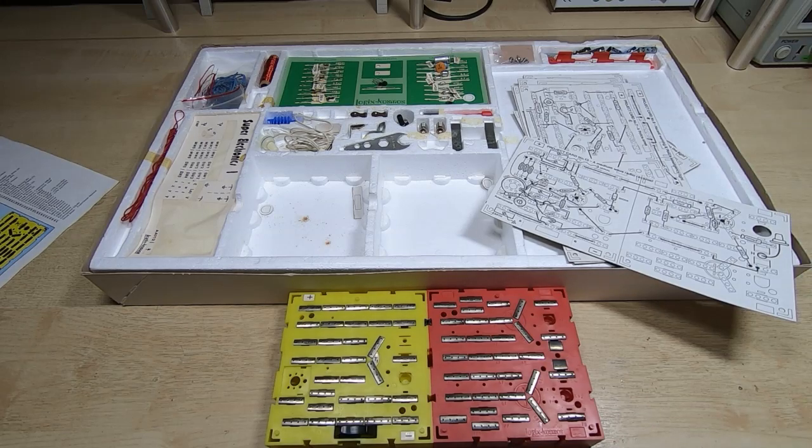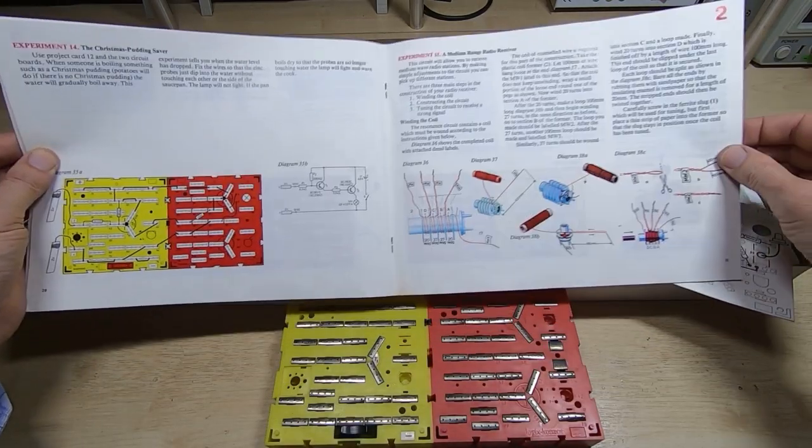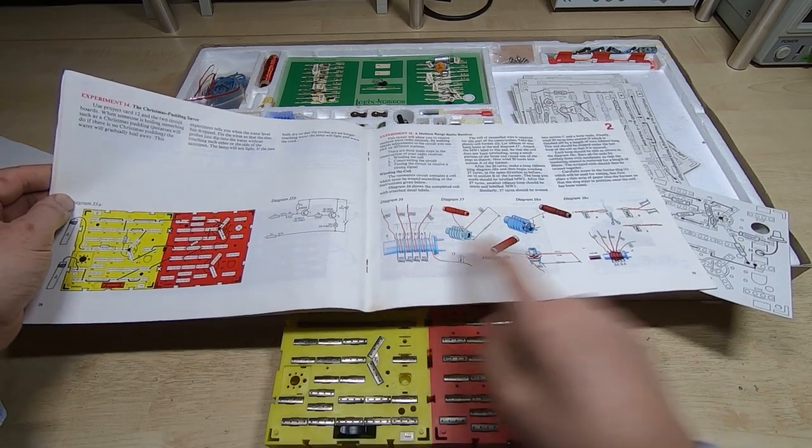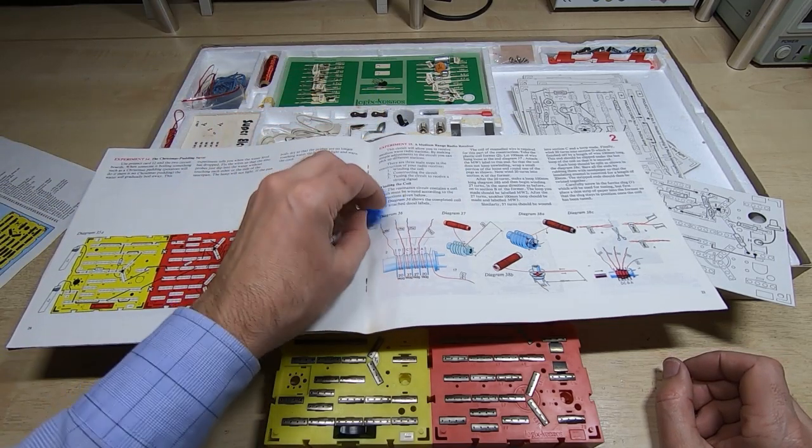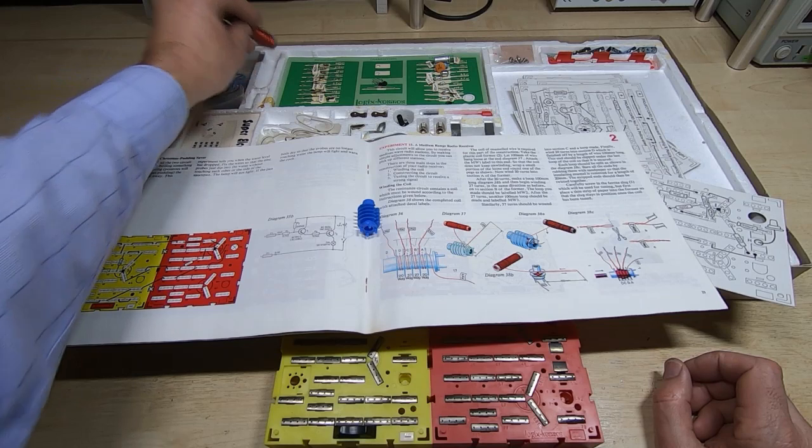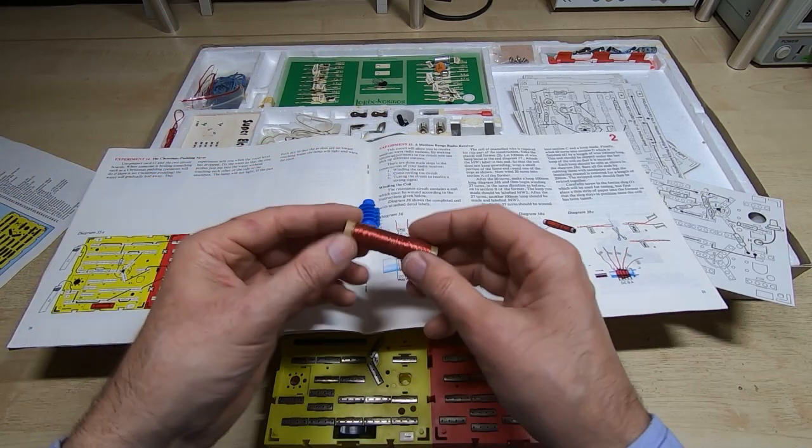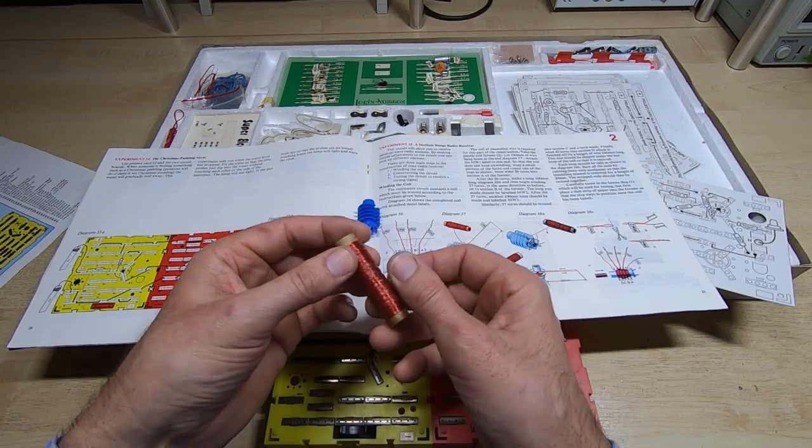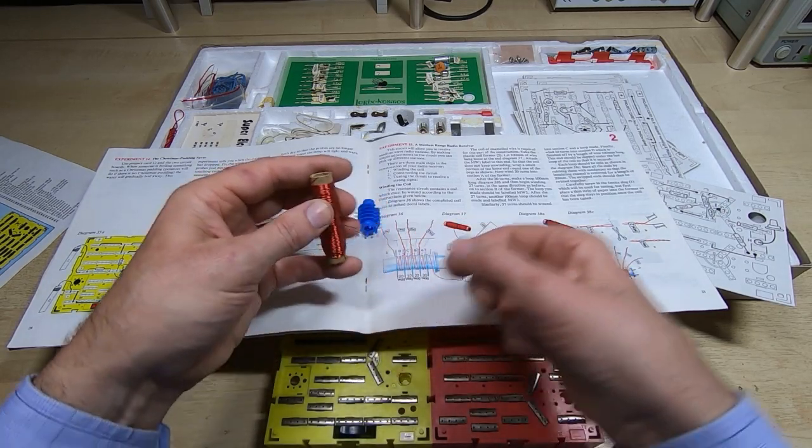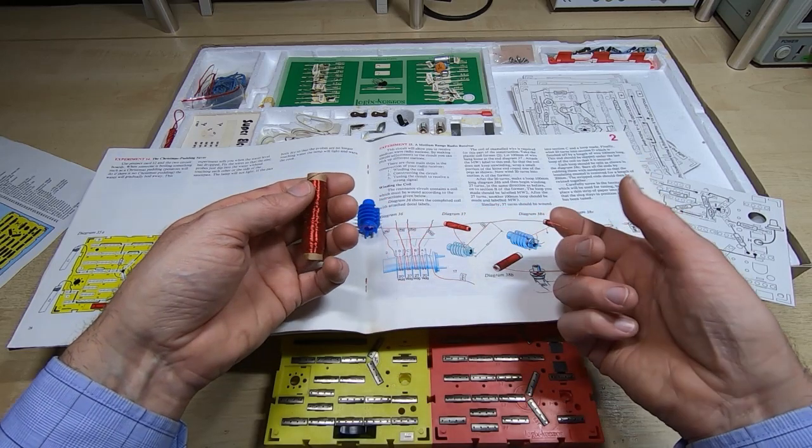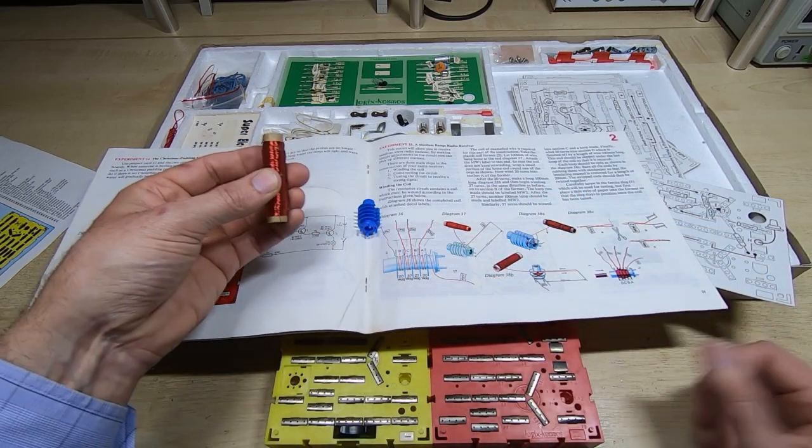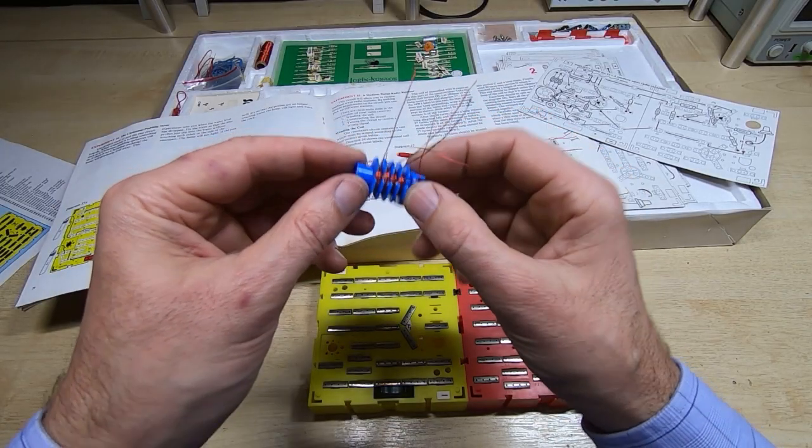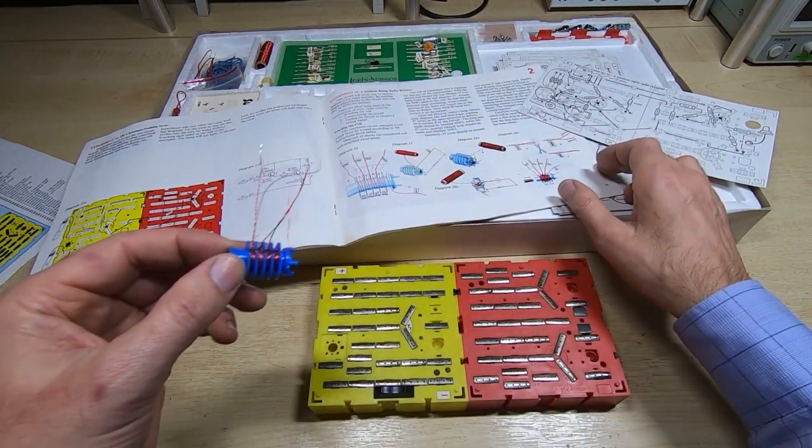Going back to the instruction book, the first thing we have to do is wind the coil. We need the coil former, which is this, and then some enameled copper wire. We just need to wind it as indicated in the manual. It looks like all the wire is here, so I don't think anyone's ever actually done this before. I'll get this wound and then we'll carry on.